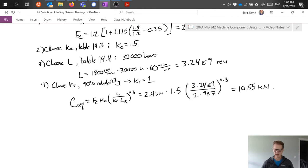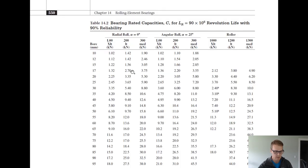So what can we go ahead and do with that? Well, now we take this number, remembering this number 10.55 kilonewtons, and we go to table 14.2 in our book. Table 14.2 gives us three separate sets of data: radial ball bearing with an angle of zero degrees, angular ball bearing with an angle of 25 degrees, and roller bearing. We're going with just radial ball bearing, and we'll use the angle of zero degrees here.